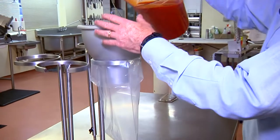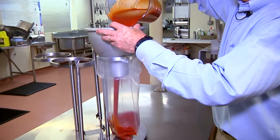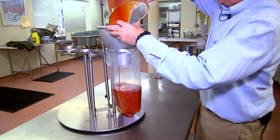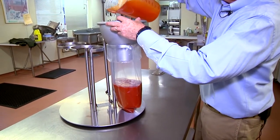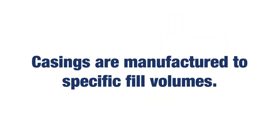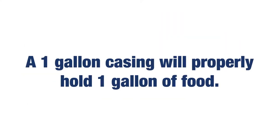The casings can be held open by a ring stand for filling. Use a calibrated vessel to pour the desired amount of food into each casing. Casings are manufactured to specific fill volumes. A one gallon casing will properly hold one gallon of food.